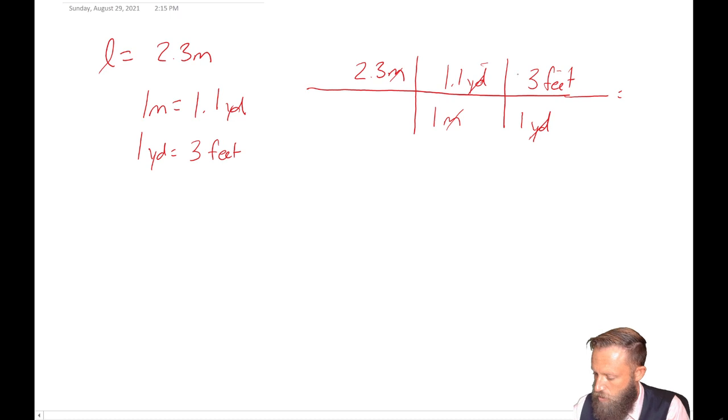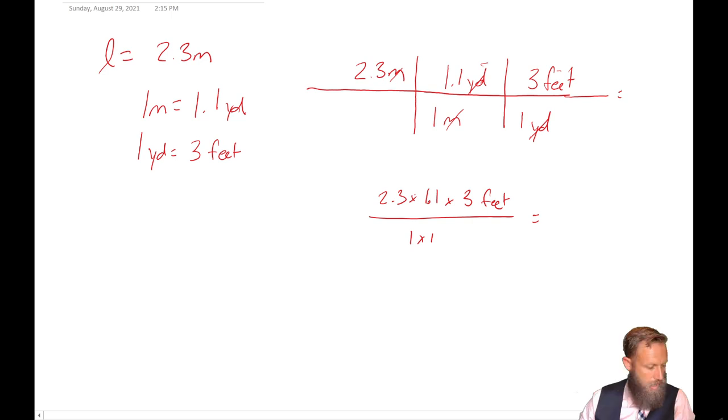So now to actually get this, we just need to multiply the top and the bottom through. So we're going to get 2.3 times 1.1 times 3 feet divided by 1 times 1. So this, obviously that's a pretty easy one. Let's just get out our handy calculators. And I use my phone for most of these. If I get my calculator out here, and I do 2.3 times 1.1 times 3, I will get 7.6 feet. All right. So we know now that 2.3 meters is equal to 7.6 feet.